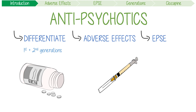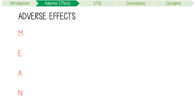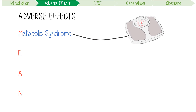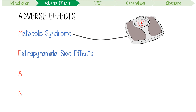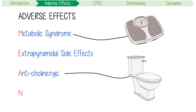All I want you to remember is that antipsychotics can be mean drugs that fill you with dread. These drugs are mean because they cause metabolic syndrome, which is a collection of issues like excess body fat and heart disease, extrapyramidal side effects, anticholinergic effects like constipation, and neuroleptic malignant syndrome.